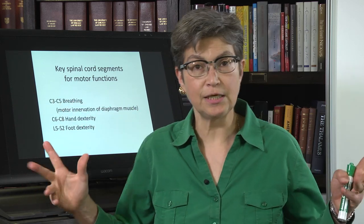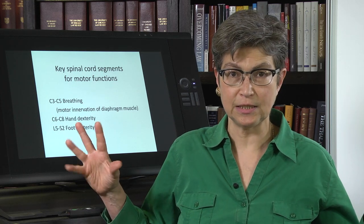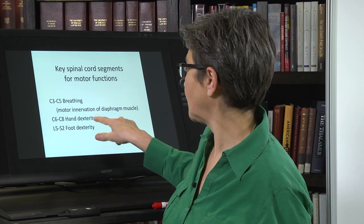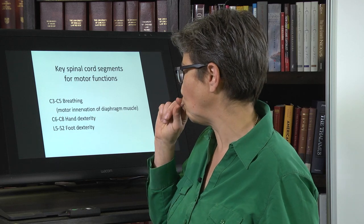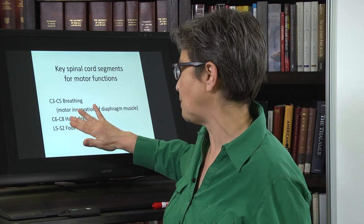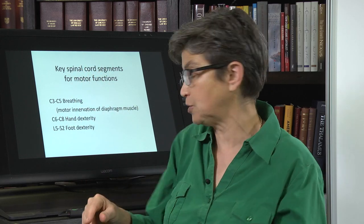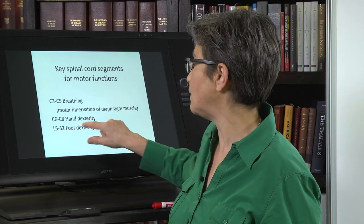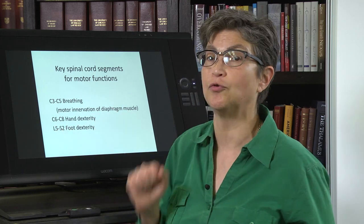For hand dexterity, this is C6 to C8. And that largely matches the sensory innervation of the hand as well. And foot dexterity is L5 through S2.